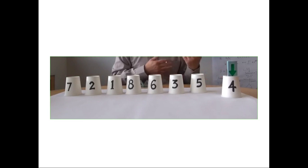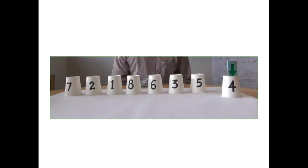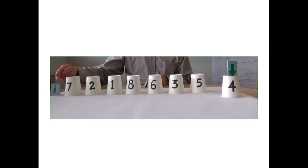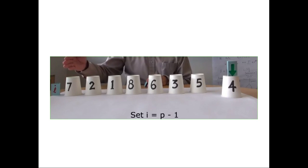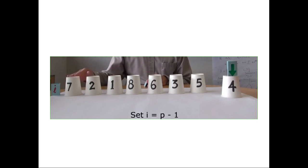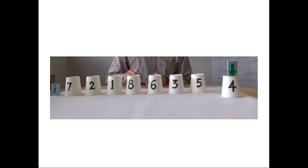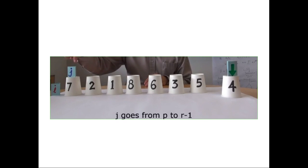We have 7 elements in our list. We will get 4 as the pivot. Now we will perform a swap. This element is the pivot, and we will swap accordingly.